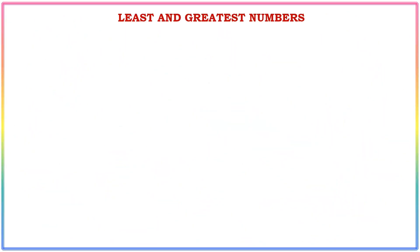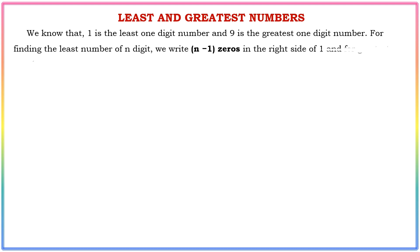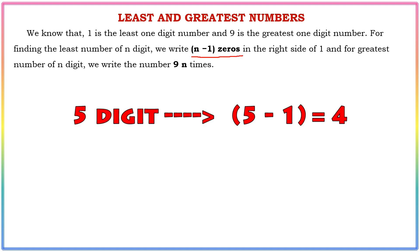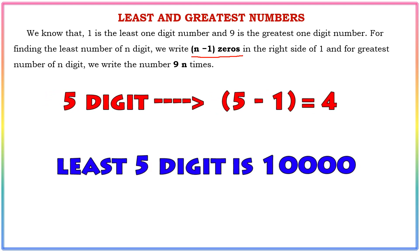The next topic is the least and greatest numbers. First, 1 is the least one-digit number and 9 is the greatest one-digit number. If you want to find the least number, there is a formula. The number of digits minus 1 gives the position of the leading digit. For example, 5 minus 1 is 4, so 10000 is the least 5-digit number.